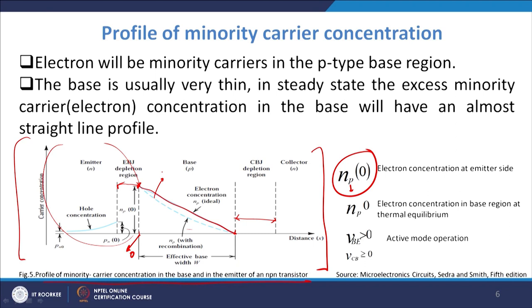With recombination, this profile becomes a parabolic non-linear curve rather than a straight line, but that detail is not critical at this stage. What is important is that the minority carrier concentration in the base region is a function of the effective base width. In the next lecture we will discuss the various electron diffusion current expressions and see how we can optimize the functioning of NPN and PNP BJTs using both drift and diffusion mathematics.